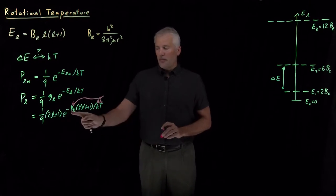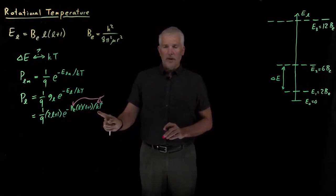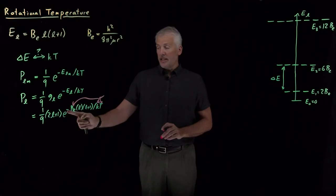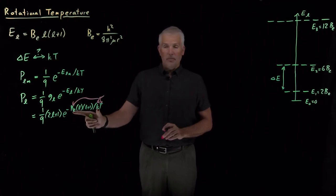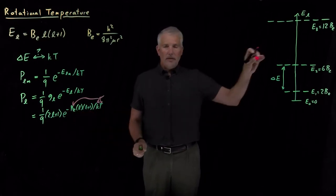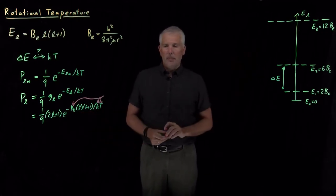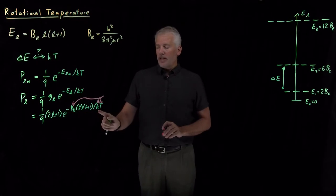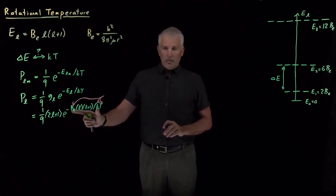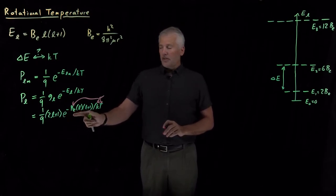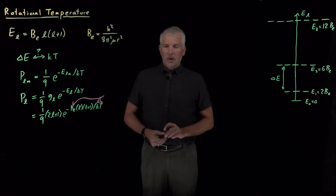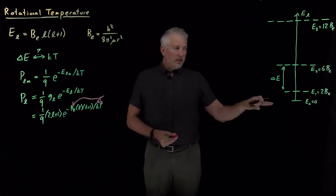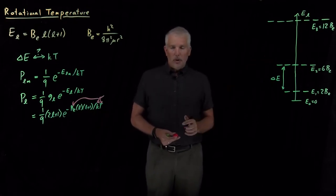If the ratio B_e/kT is a large number, then e to the negative large number is very small and the energy levels won't be very populated. But if B_e/kT is a small number, then e to the negative small number is not that small and the energy levels might be well populated.